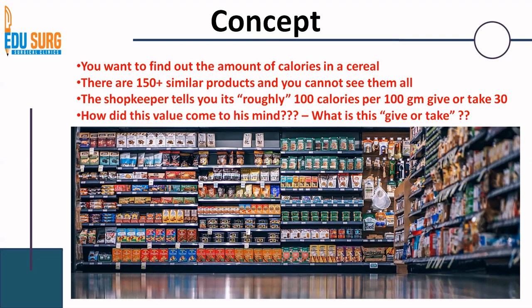If the shopkeeper tells you this, there has to be some basis for it, right? What is this 'roughly'? What is this 'give or take'? Keep this question in mind — we will come back to it when we are discussing variance and standard deviation.